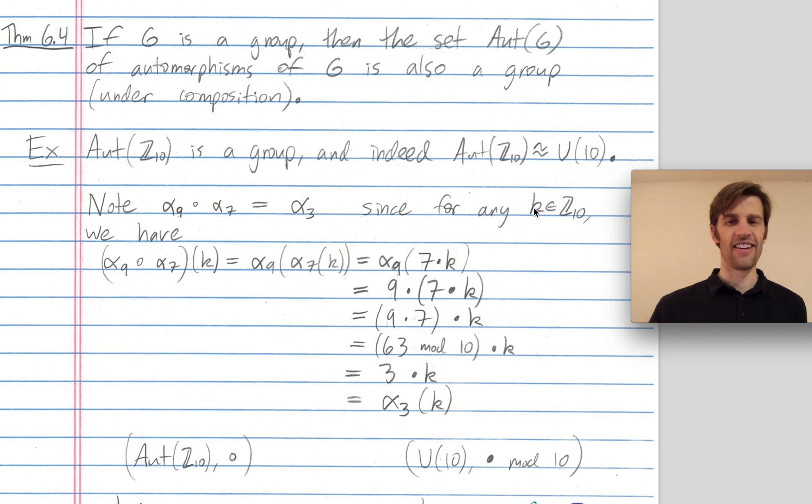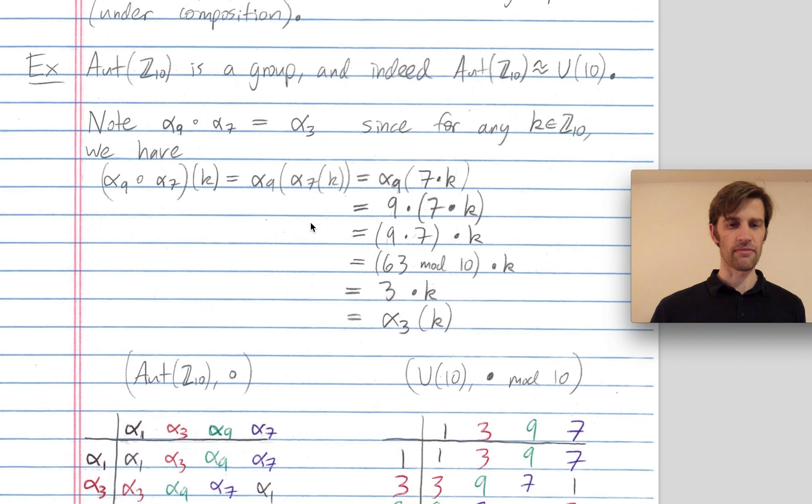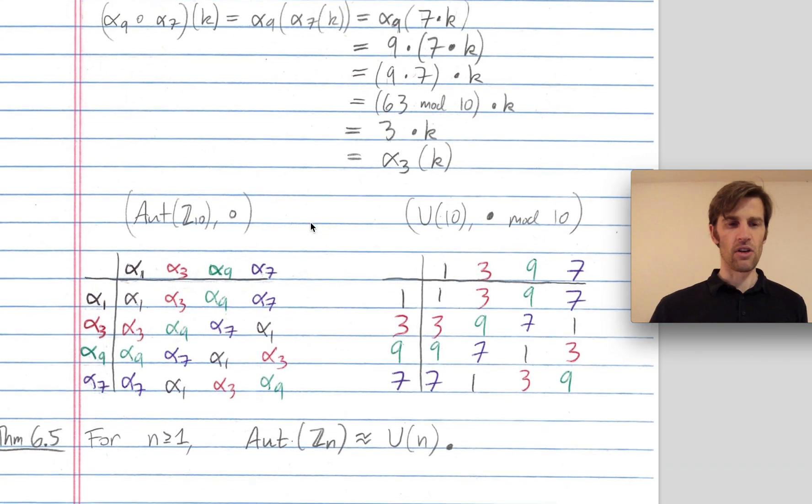I get 3 times k, which is indeed alpha 3 applied to k. So just like 9 times 7 is equal to 3 in U(10), we've verified that in this automorphism group, alpha 9 and alpha 7 compose together to give me alpha 3.